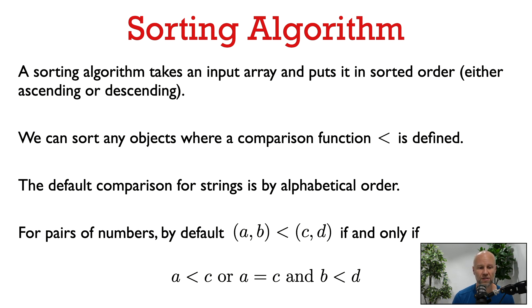For pairs of integers, we could, for example, say that the pair a, b is less than the pair c, d if and only if a is less than c, or in the case that a is equal to c, then if b is less than d. So these are just examples of default comparison functions that we have on different types of objects.